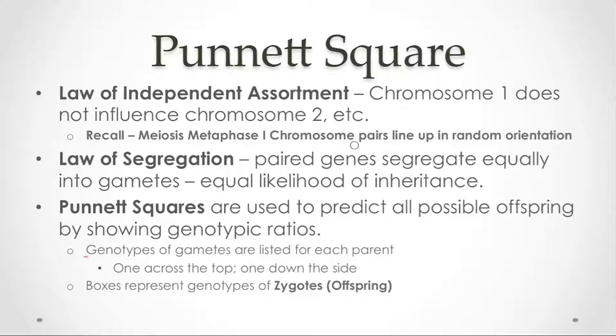The next idea Mendel coined was the law of segregation. This talks about a specific set of chromosomes — for example chromosome 1. It means that it's just as equally likely for the paternal copy or the maternal copy to make it into a gamete. They have equal likelihood of that particular allele being in the sperm or in the egg.